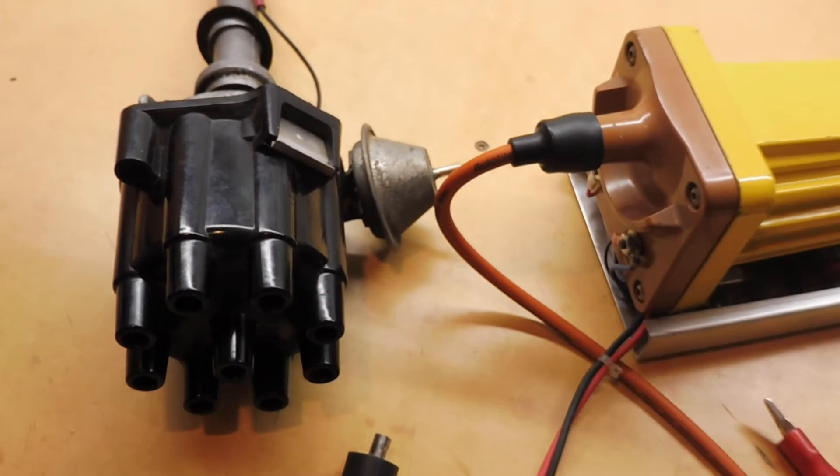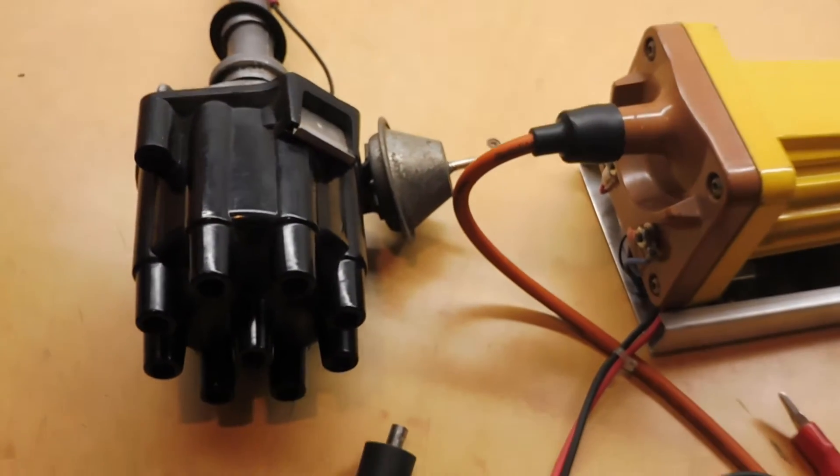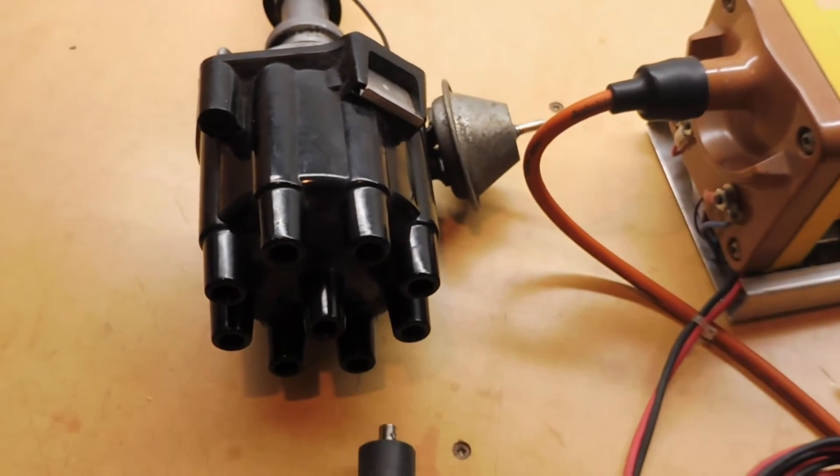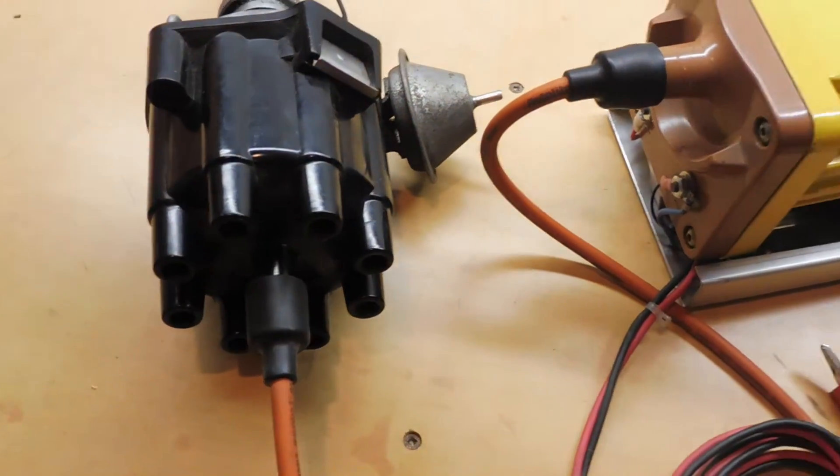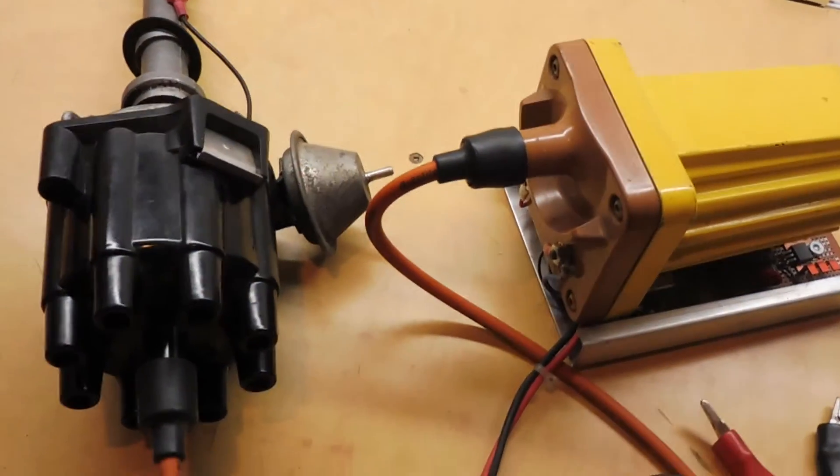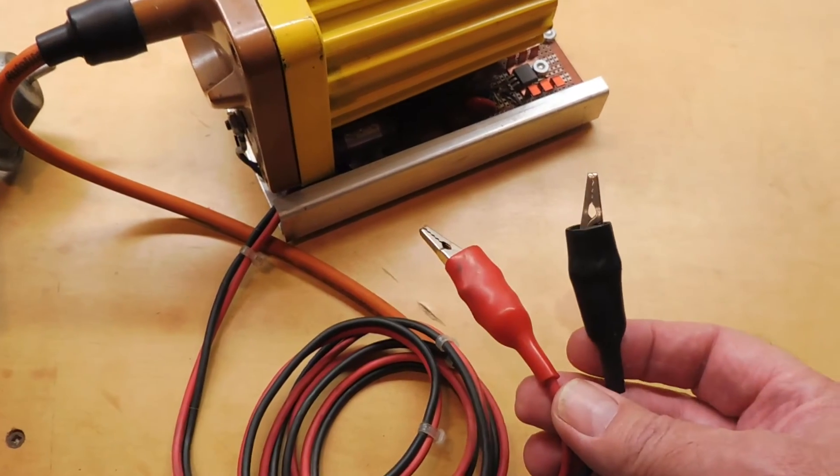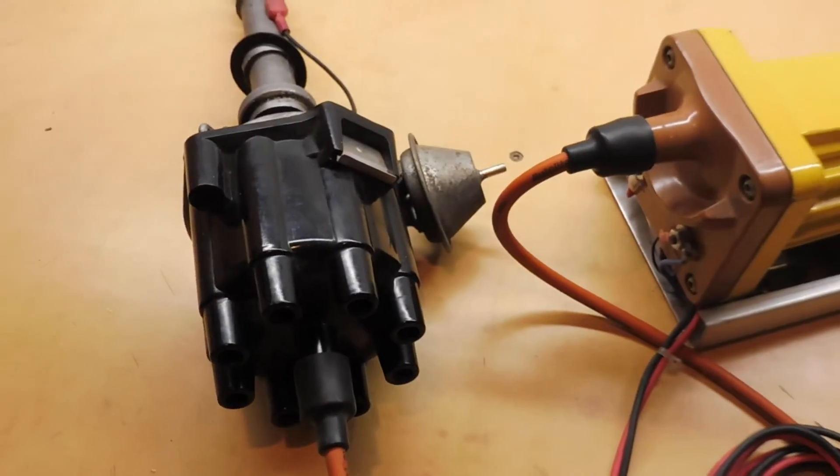So what you do, you pull off the existing wire off the center post of the distributor and attach the wire from the output of the spark generator. Hook up the plus and minus to the battery and fire it up.